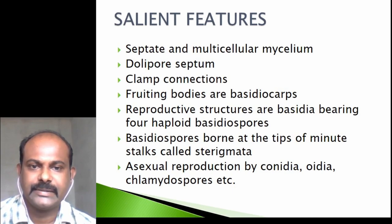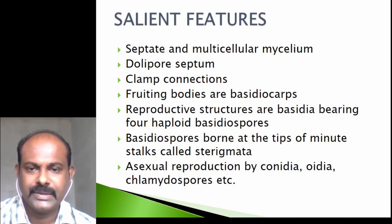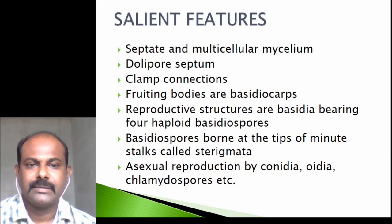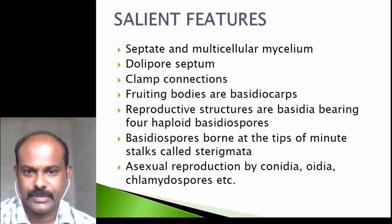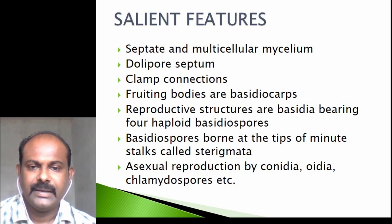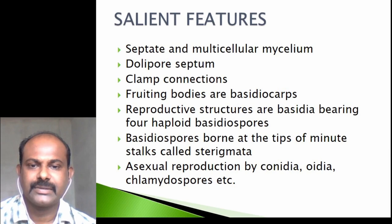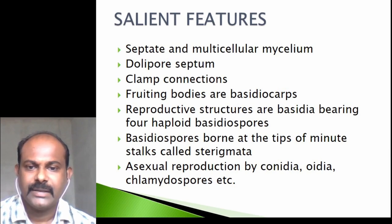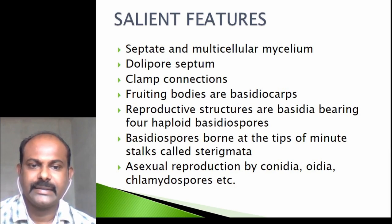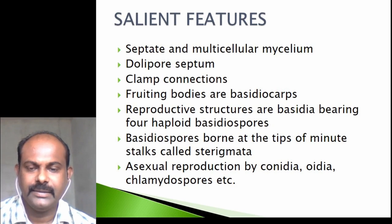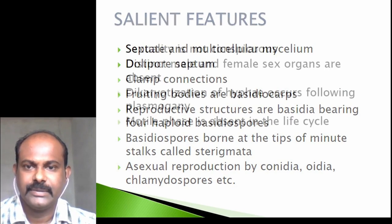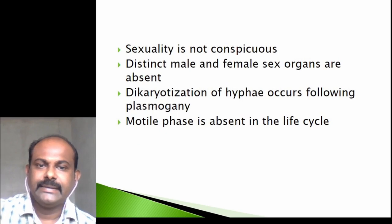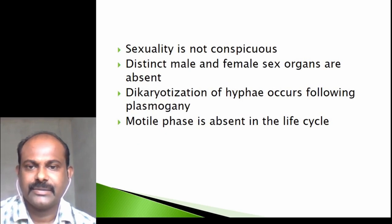The fruiting bodies are called as basidiocarps. The reproductive structures are basidia, which bear four haploid basidiospores. These basidiospores are borne at the tips of minor stalks called as sterigmata. Asexual reproduction can take place by means of conidia, oidia, and chlamydospores.